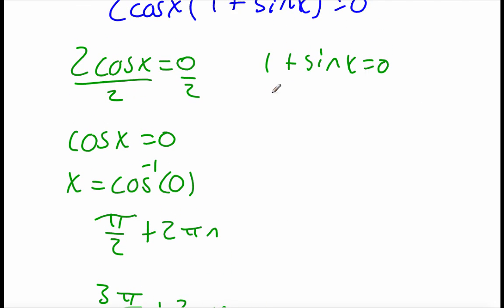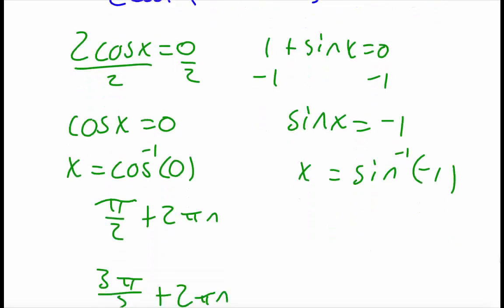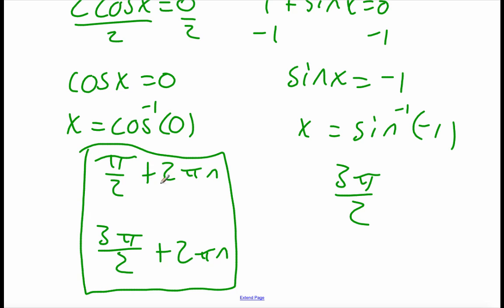Now let's solve the other piece. We subtract 1 over to the right-hand side, giving sine of x equals negative 1. Rewriting as an inverse, we get the inverse sine of negative 1. Checking the unit circle, that happens at 3 pi over 2 — but I've already got that one on my list, so I'm not going to write it down again. So our answers are pi over 2 plus 2 pi n and 3 pi over 2 plus 2 pi n.